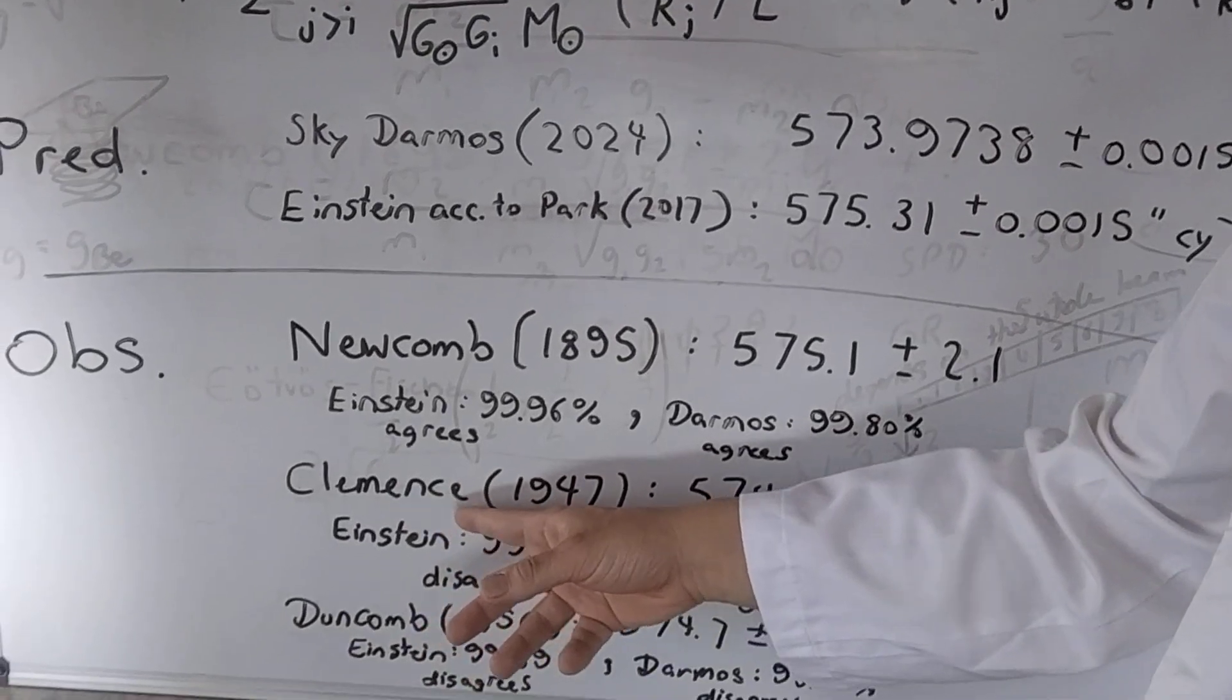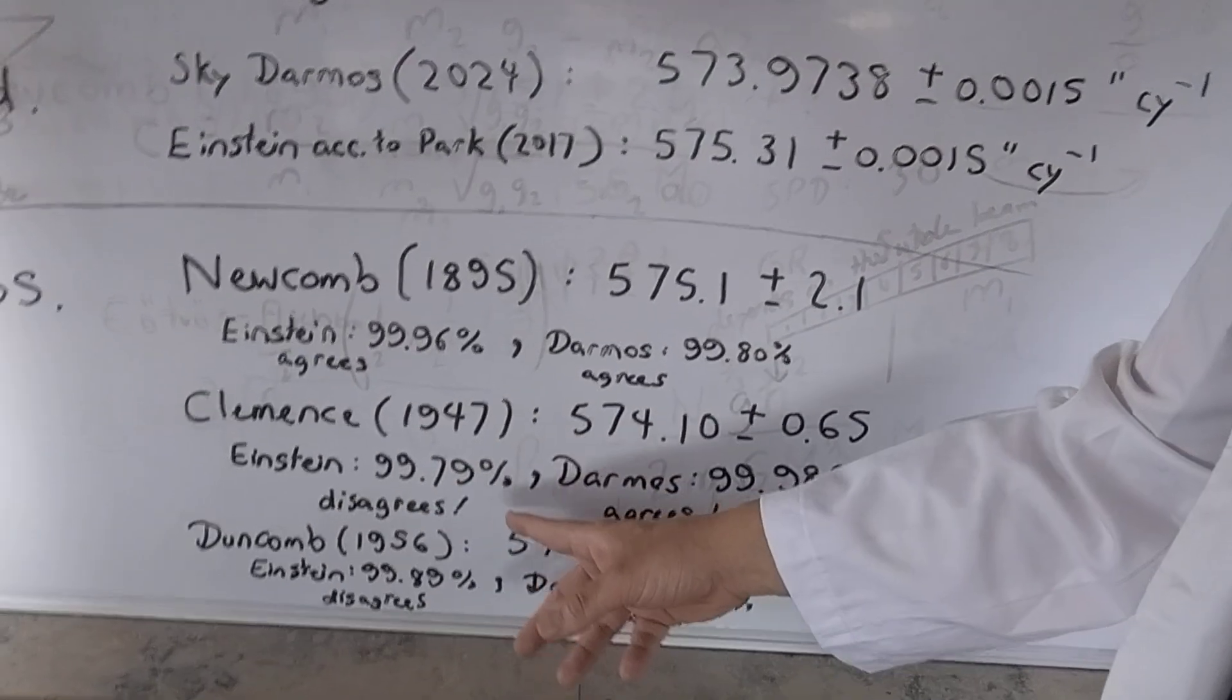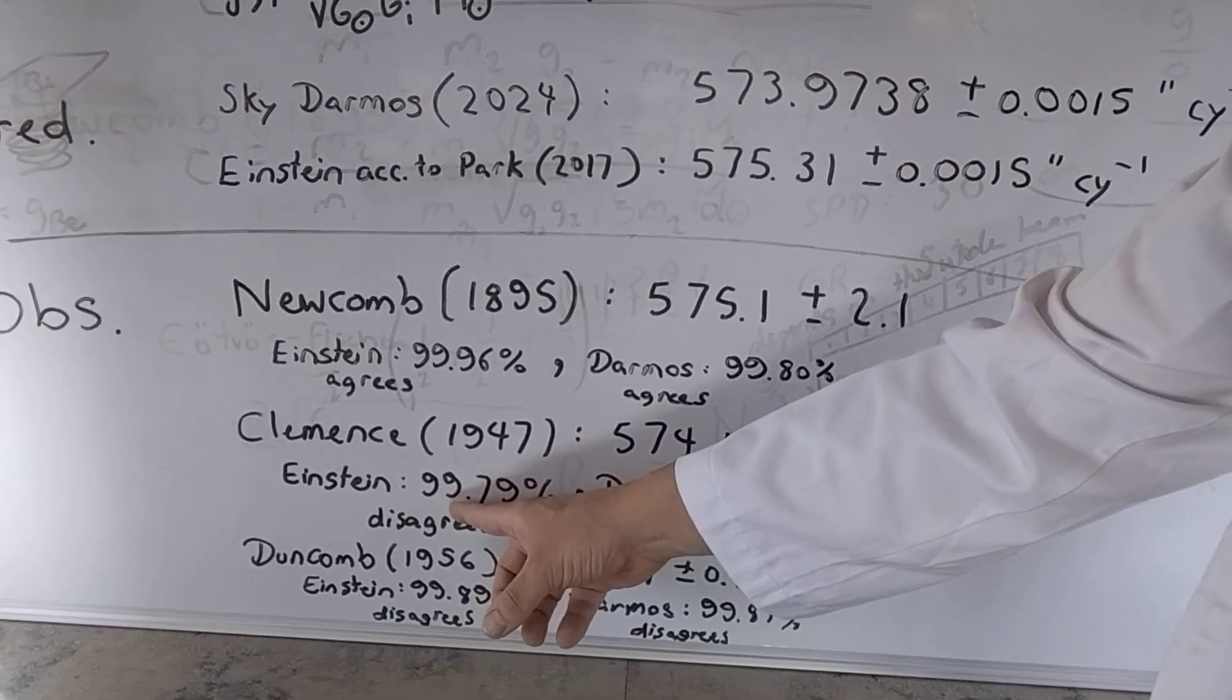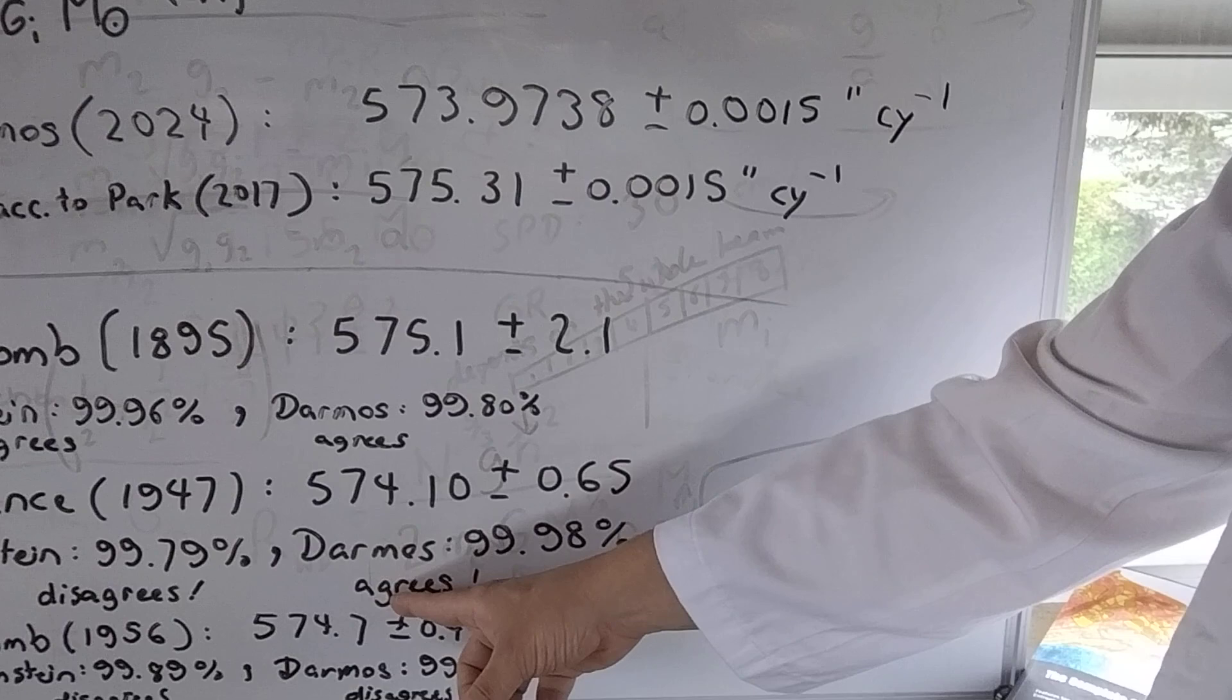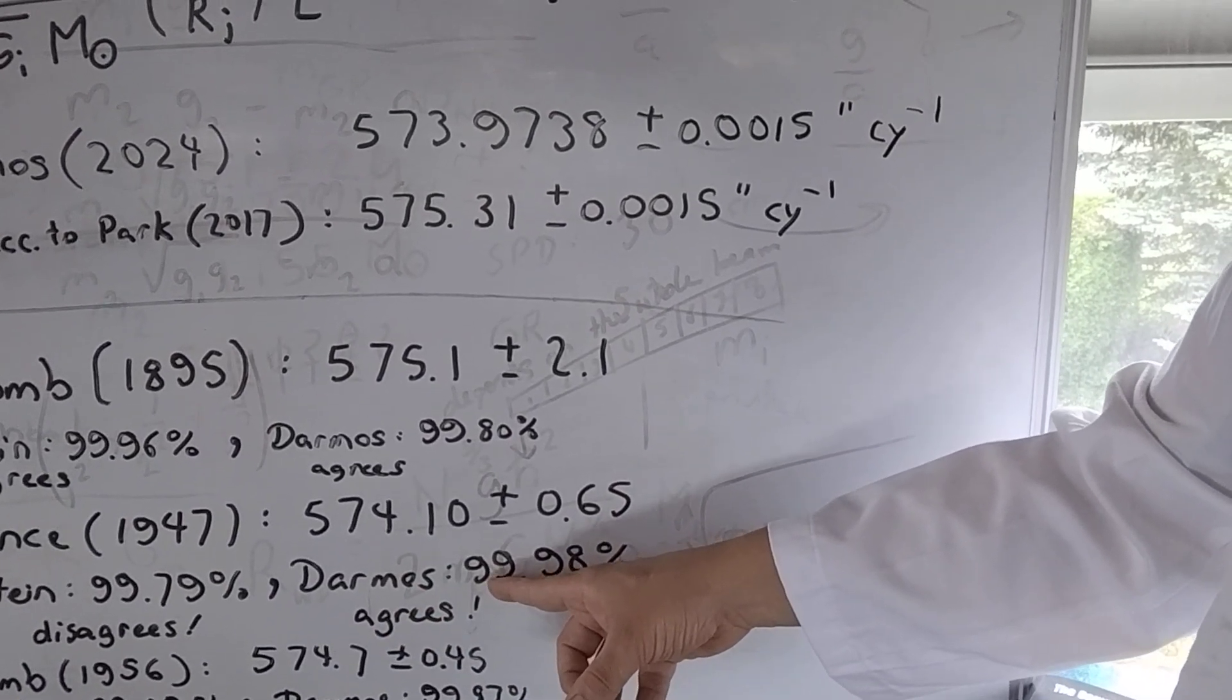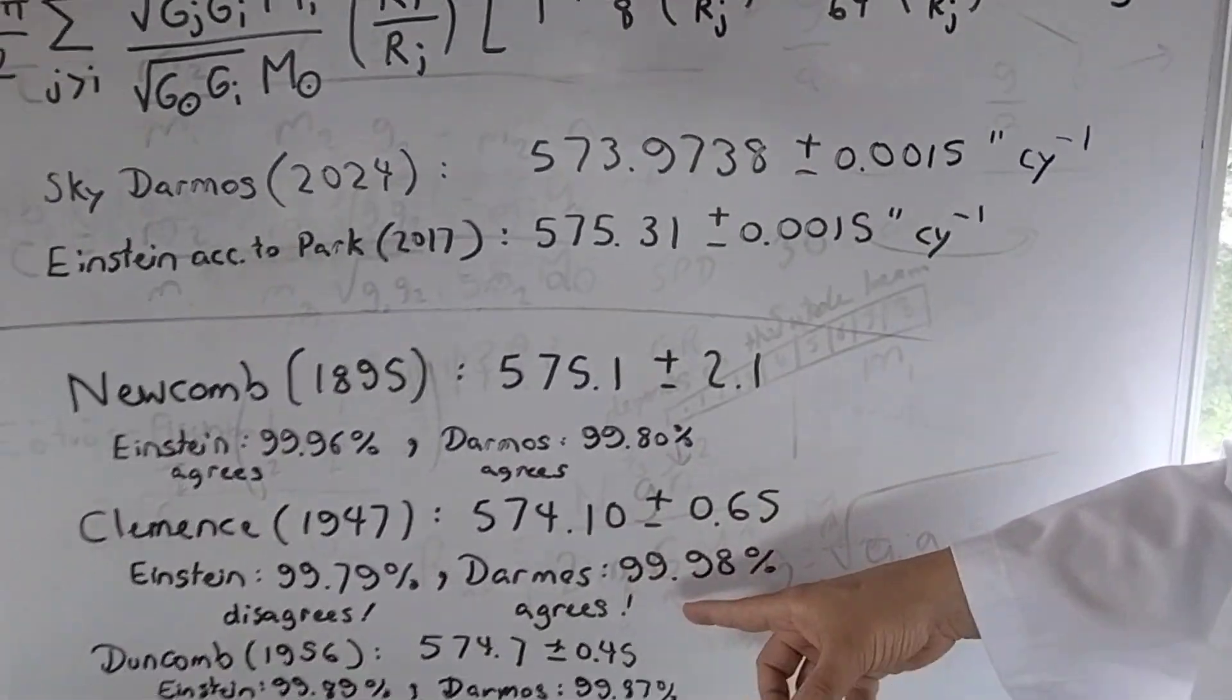Then Clemens, which is cited by Wikipedia. Here, Einstein actually disagrees. And the agreement in value is only 99.79%. And my prediction agrees with the margins of error and increases in value to 99.98%. Now, that's a very large percentage.